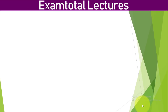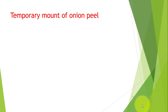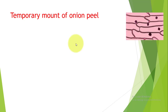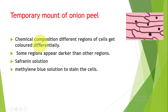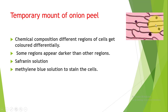In part one, we saw about the temporary mount of onion peel. When we made that temporary mount and observed it under the microscope, we saw some hexagonal structures. When iodine solution was added, it is used for staining cells. Onion cells are transparent, so to easily see them under the microscope we need a stain like iodine solution. Due to chemical composition, different regions of the cell get colored differently - cell wall and cell membrane appeared dark, and the central region was less stained.